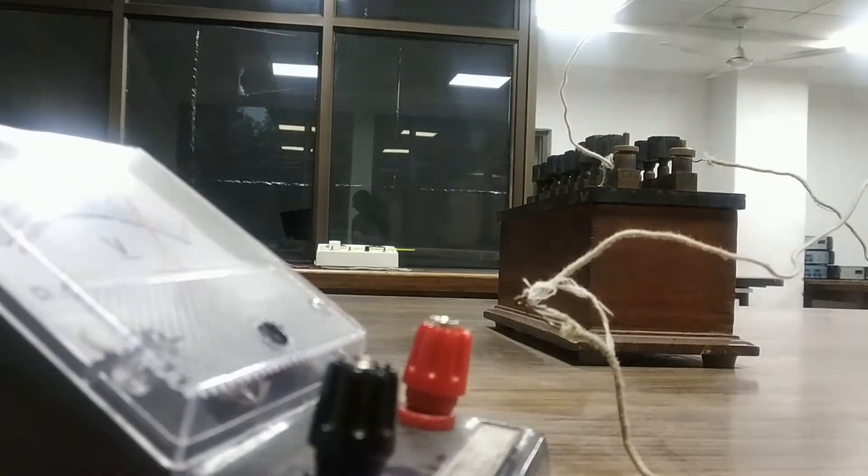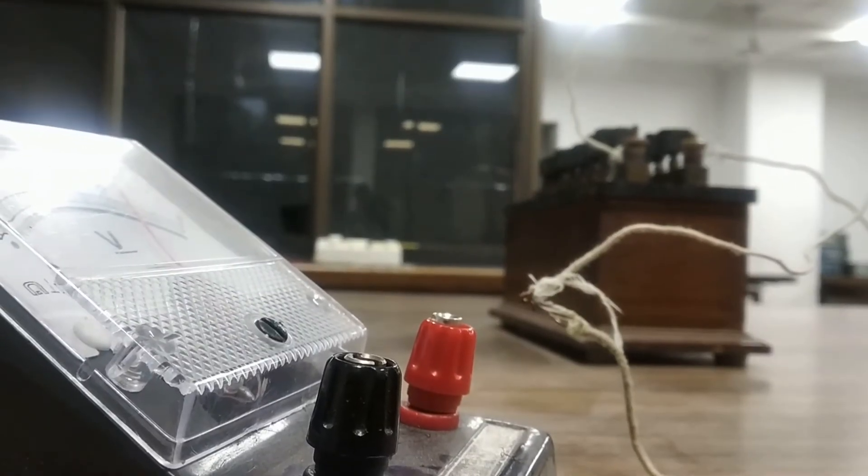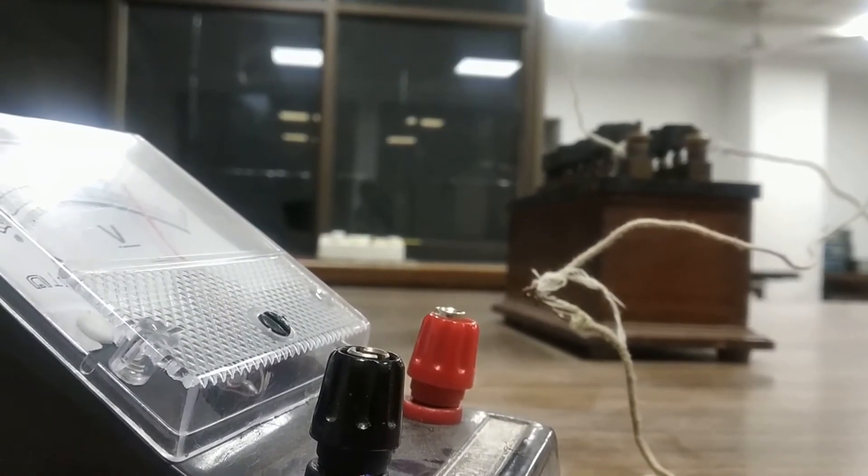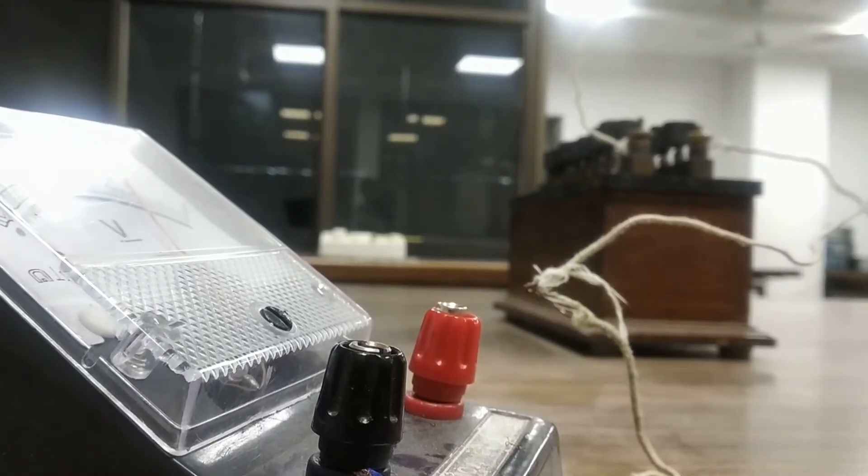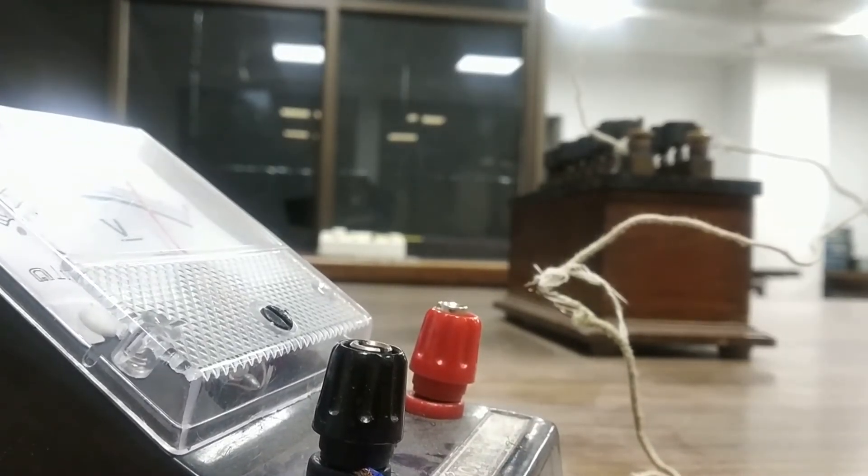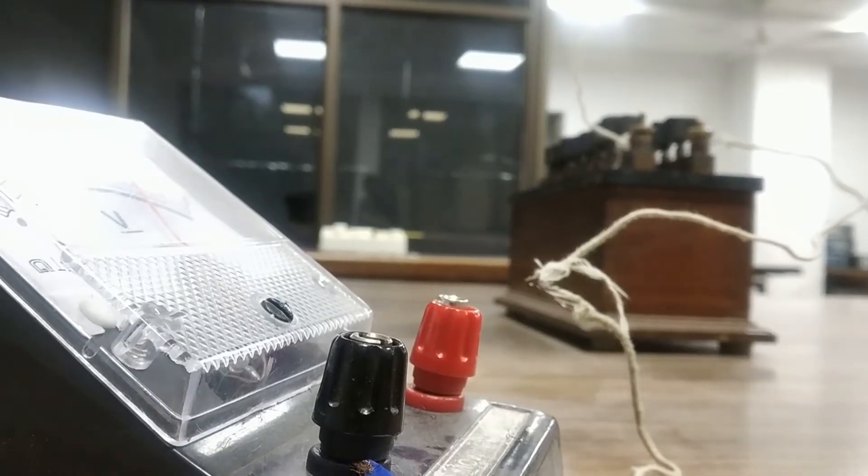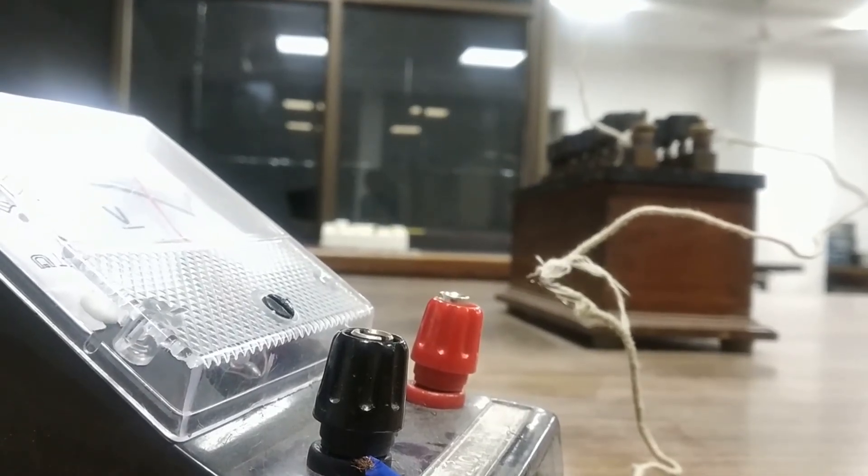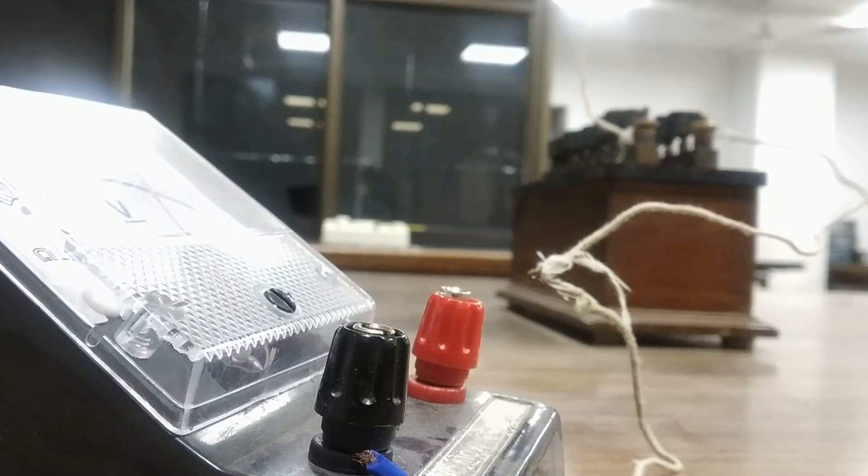Now, after that, we have to note the value of resistance in the resistance box. Means, the remaining resistance that remained in the resistance box and it will be the resistance of voltmeter, let's say it's Rv.